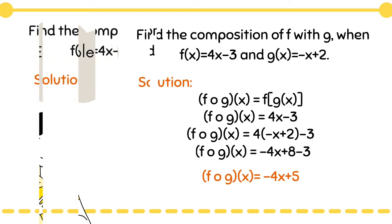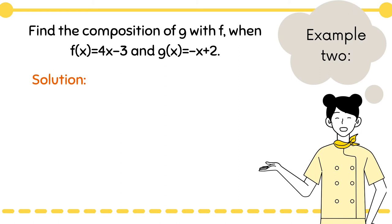Simple, right? Now let's try mixing it up a little bit. Let's try using the same given but inverting the functions from example one — from f of g, let's make it g of f. Example number two: find the composition of g with f when f(x) = 4x − 3 and g(x) = −x + 2. So we have our solution g of f of x.